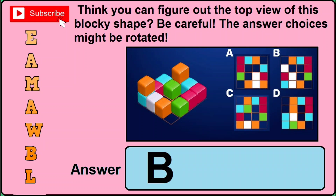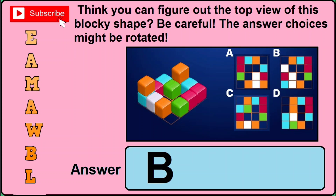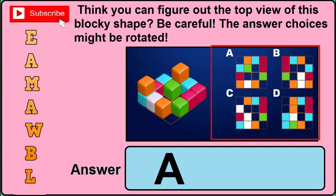Watch the image and you can see it is different from version 1, so the correct answer for this sort of image will be B — just click B in the answer box. In version 3 of this question, watch the image — you can see it is different from version 1 and version 2 — so the correct answer for this sort of position will be A.